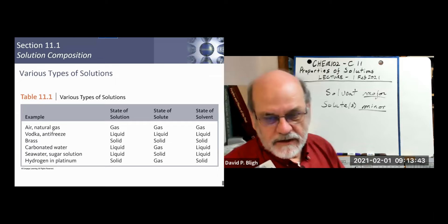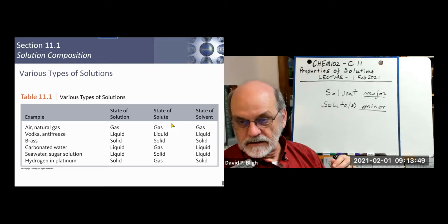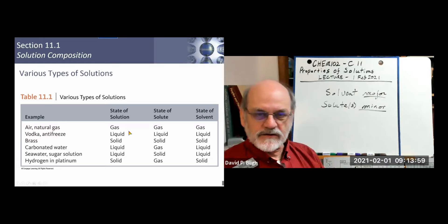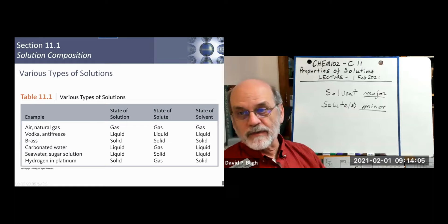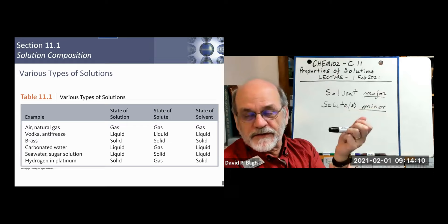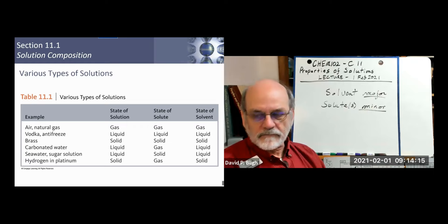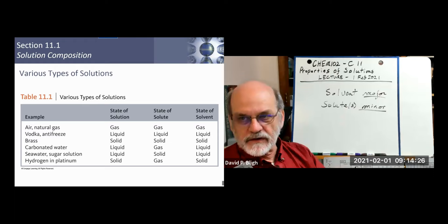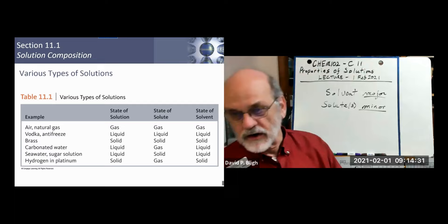Whenever you mix a gas with a gas, you always get a solution — every time. The particles in a gas are very far apart compared to liquids and solids, so there's plenty of room. You just fit the other gas inside the solvent gas and you have a solution. An example is air: primarily nitrogen at 79%, oxygen around 20%, and the other 1% is various other gases — mostly argon, the inert gas.